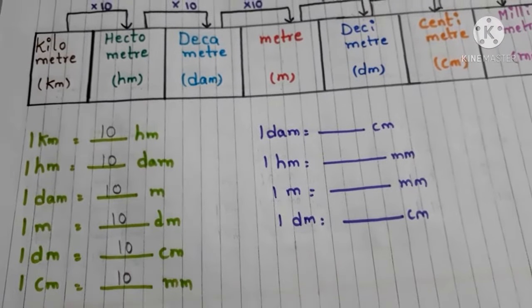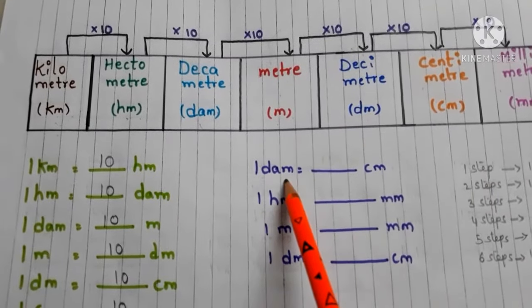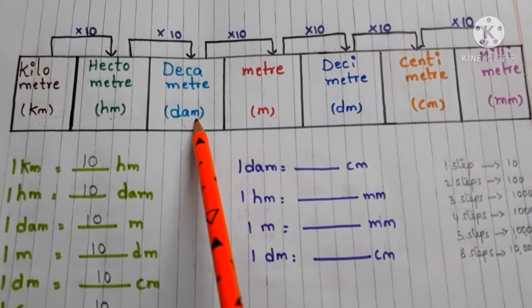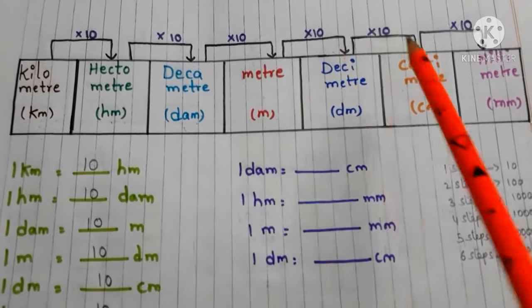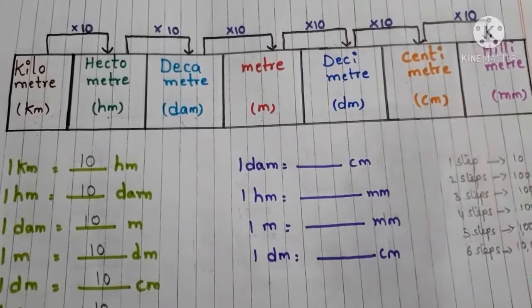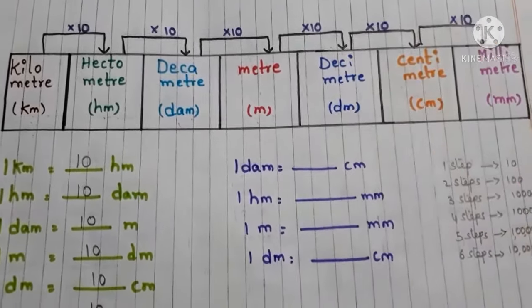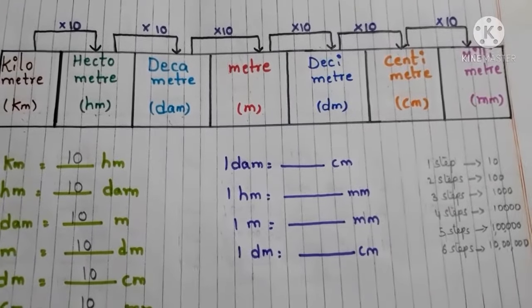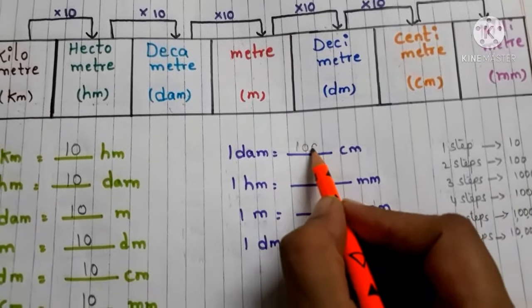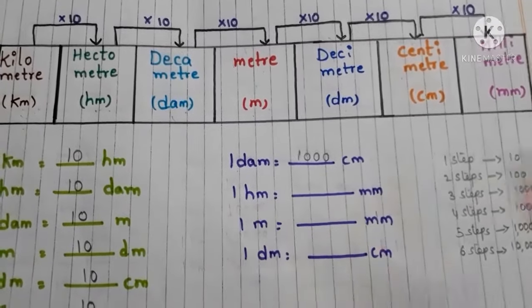Now let us see: 1 decameter equals how many centimeters? Find decameter in the table, then find centimeter. Count the steps from decameter to centimeter: one, two, three — three steps. So we multiply by 1,000. Therefore, 1 decameter equals 1,000 centimeters.